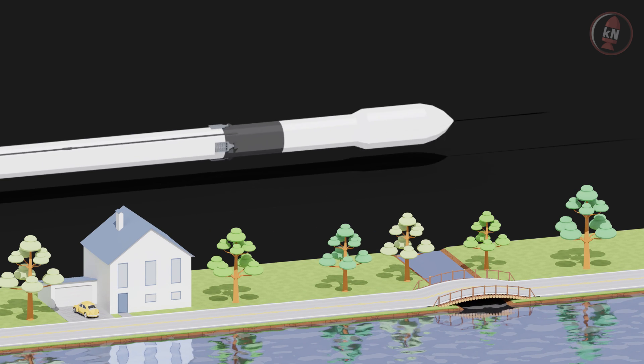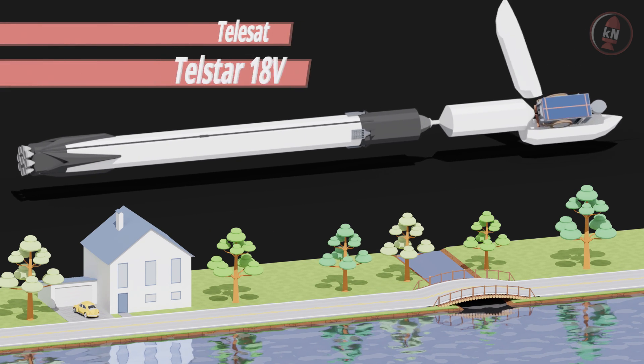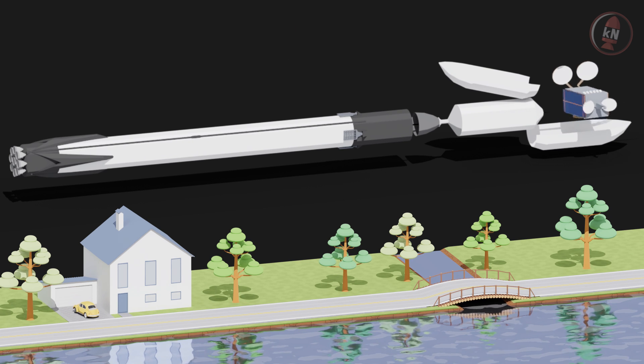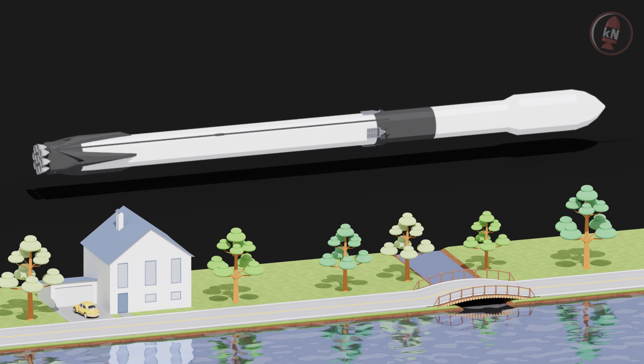It will head to a geosynchronous transfer orbit where the upper stage will release its communication satellite. Up top the two stage rocket is Telstar 18V, a communications satellite for the Canadian company TELESAT. I think it's pronounced French but I'm not sure.